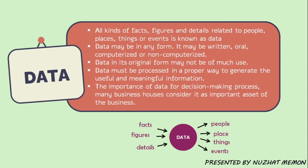Data in its original form may not be of much use; data must be processed in a proper way to generate useful and meaningful information. For example, in the movie Three Idiots, Aamir Khan wrote something on the board and everybody tried to search and process it — that was the data. Then they came to know the word consisted of the names of his two friends — that result obtained after processing of the data is information. Many business houses consider data an important asset; sometimes it may seem small and insignificant, but one day it can be an absolute game changer for your organization.